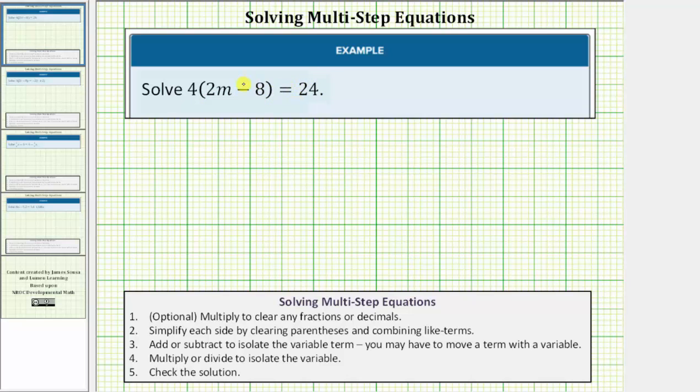In order to solve the equation, we need to isolate the variable on one side of the equation. This will take multiple steps, which is the reason why this is often called a multi-step equation. Looking at our notes below, we can skip the optional step one because we don't have any fractions or decimals.